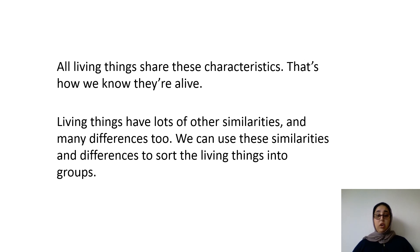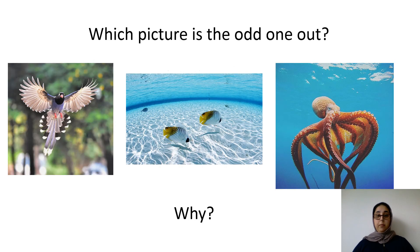Living things have lots of similarities but they also have many differences. So we can use these similarities and differences to sort living things into groups. Take a look at the pictures on screen. Which picture is the odd one out and why? There can be many answers to this as long as you justify your reasoning. Pause the video and have a think.